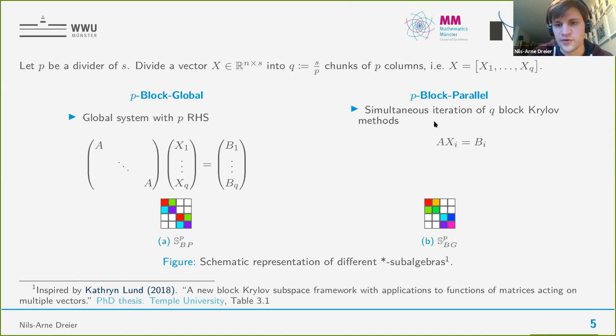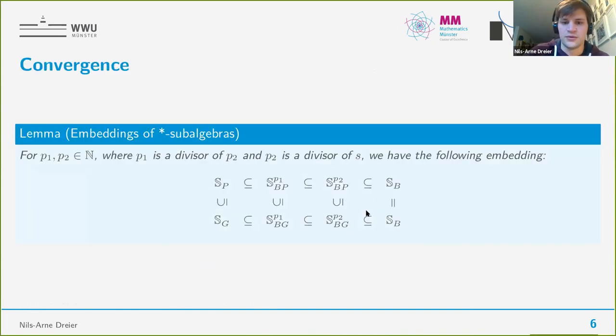For the block parallel method, this is quite similar, but we consider all the systems separately and execute them in this parallel fashion. This leads to a star sub-algebra that has the block diagonals occupied, but they are allowed to be different.